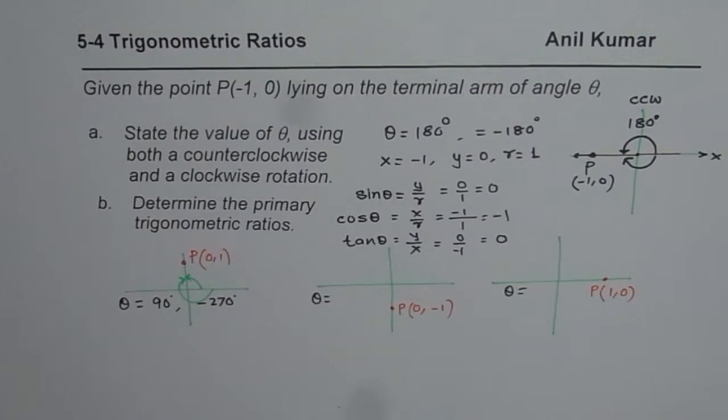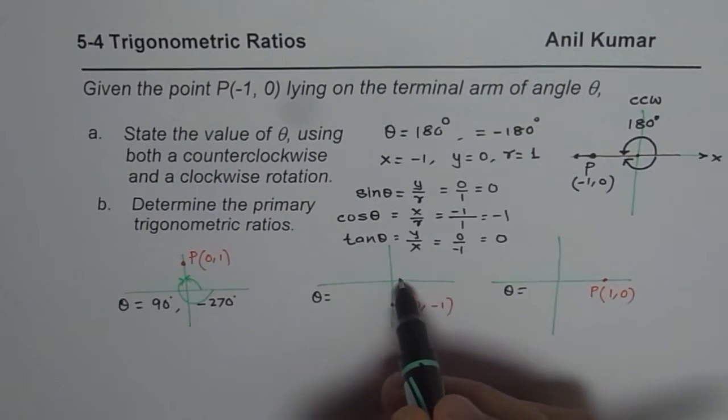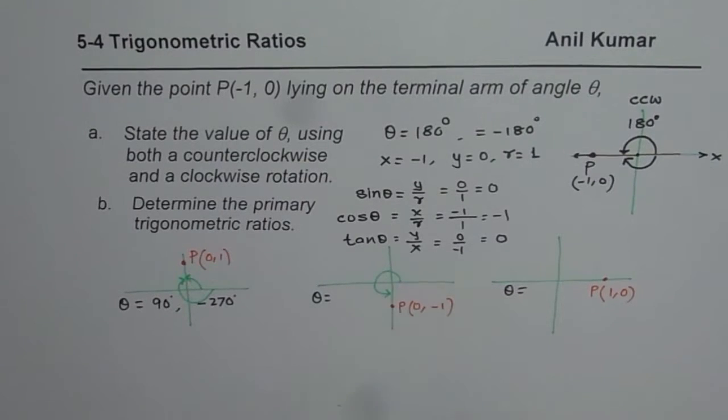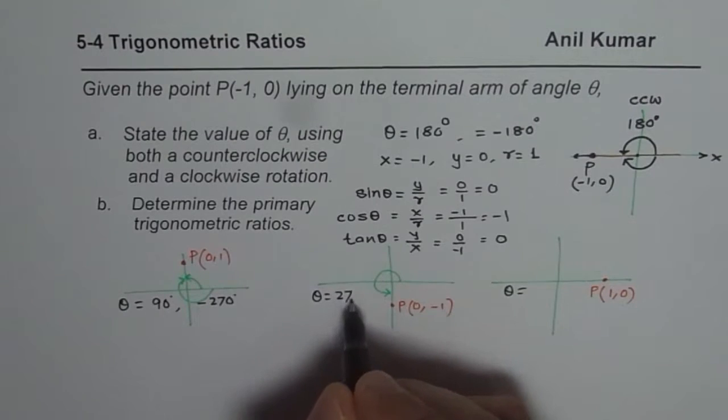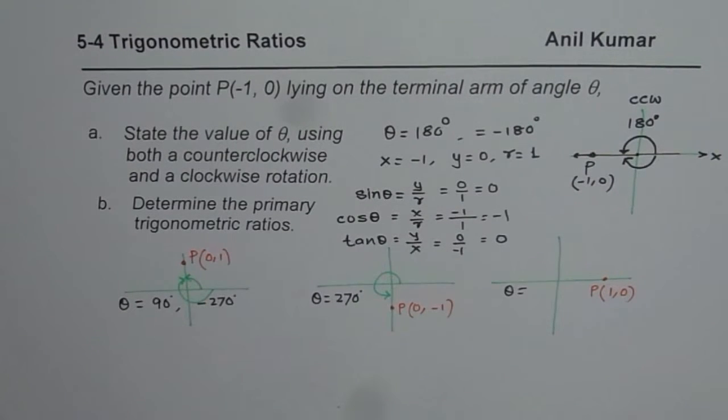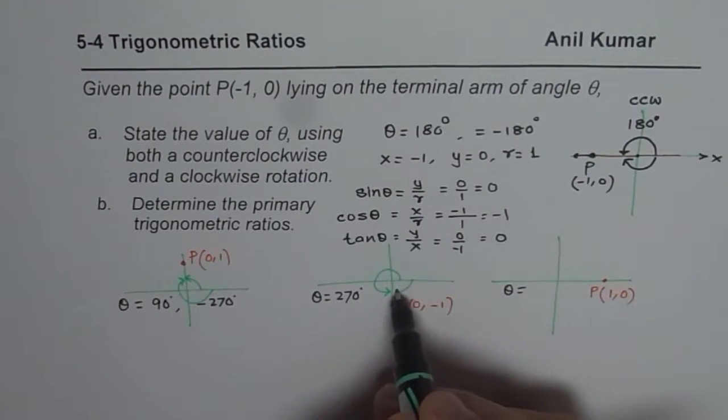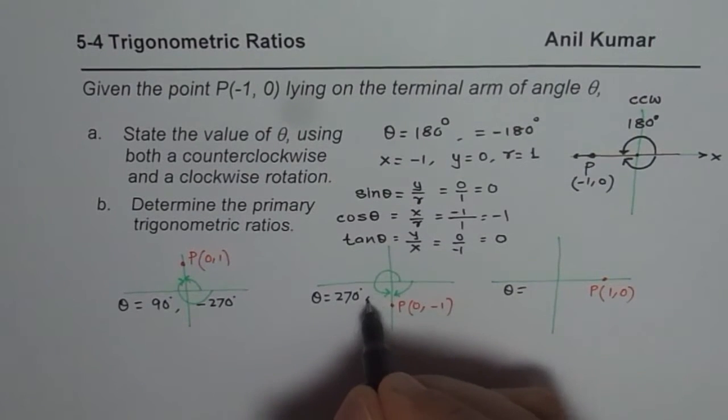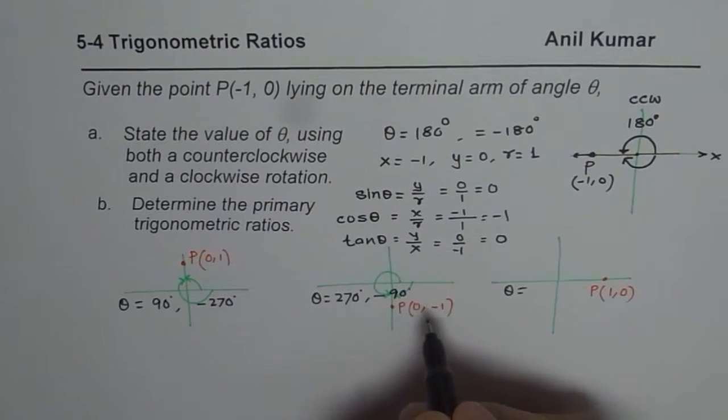Here in this particular case, clockwise is 270 degrees. And counterclockwise will be 90 degrees with a negative sign.